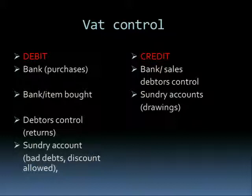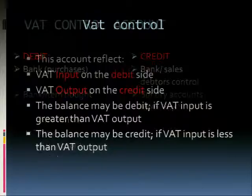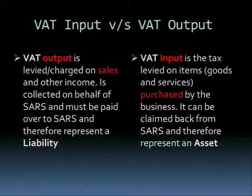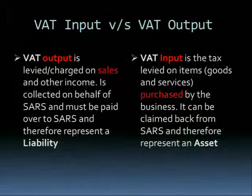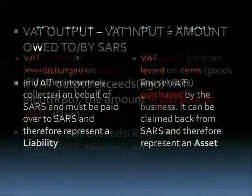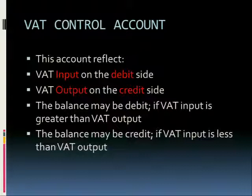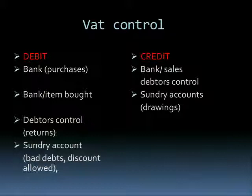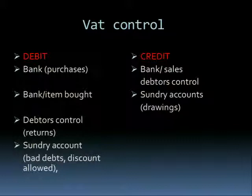Under your VAT control account, you are controlling VAT input and output. On the debit side you will have bank for purchases — as the business you can purchase stock to sell or stock to use in your business. For example, I'm a general dealer and I still need to buy a vehicle or van to transport my goods — that would be a second bank entry for the item bought, such as a delivery van.